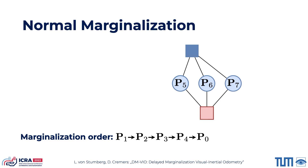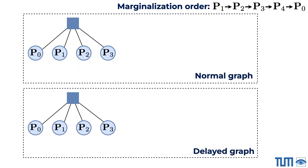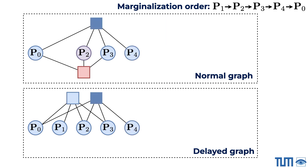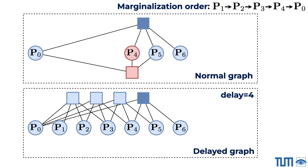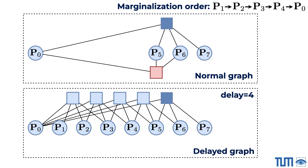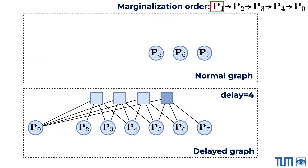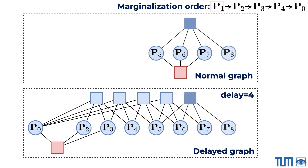We propose delayed marginalization to overcome both of these drawbacks. The idea is to maintain a second factor graph where marginalization is delayed. Until the delay is reached, marginalization is only performed in the main graph but not in the delayed graph. Here we show a delay of 4, but in practice we use a delay of 100. Note that we retain the same marginalization order as the main graph and don't just marginalize the oldest pose, ensuring that marginalization in the delayed graph is as fast as in the normal graph, no matter how large the delay is.